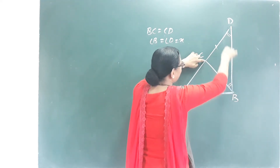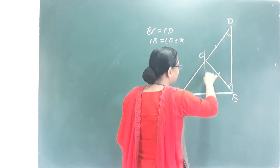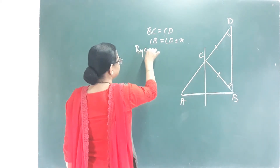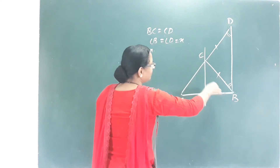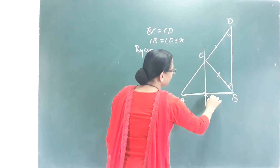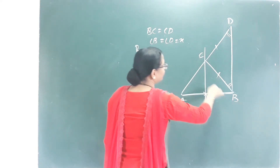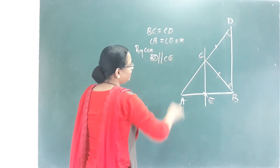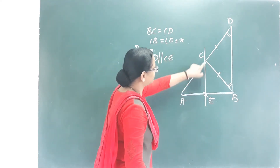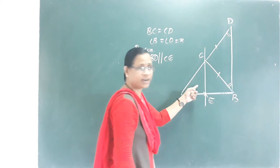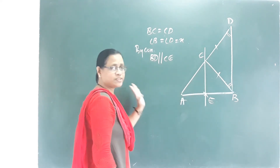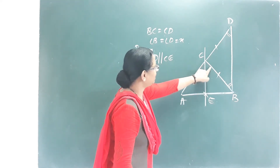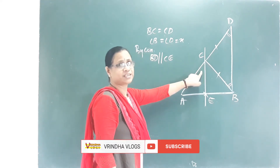This line is a parallel line. By construction, BD is parallel to CE — I will name the intersection point E. So CE is parallel to BD. These two angles are the same. This is the first result: the line EC is the angle bisector.